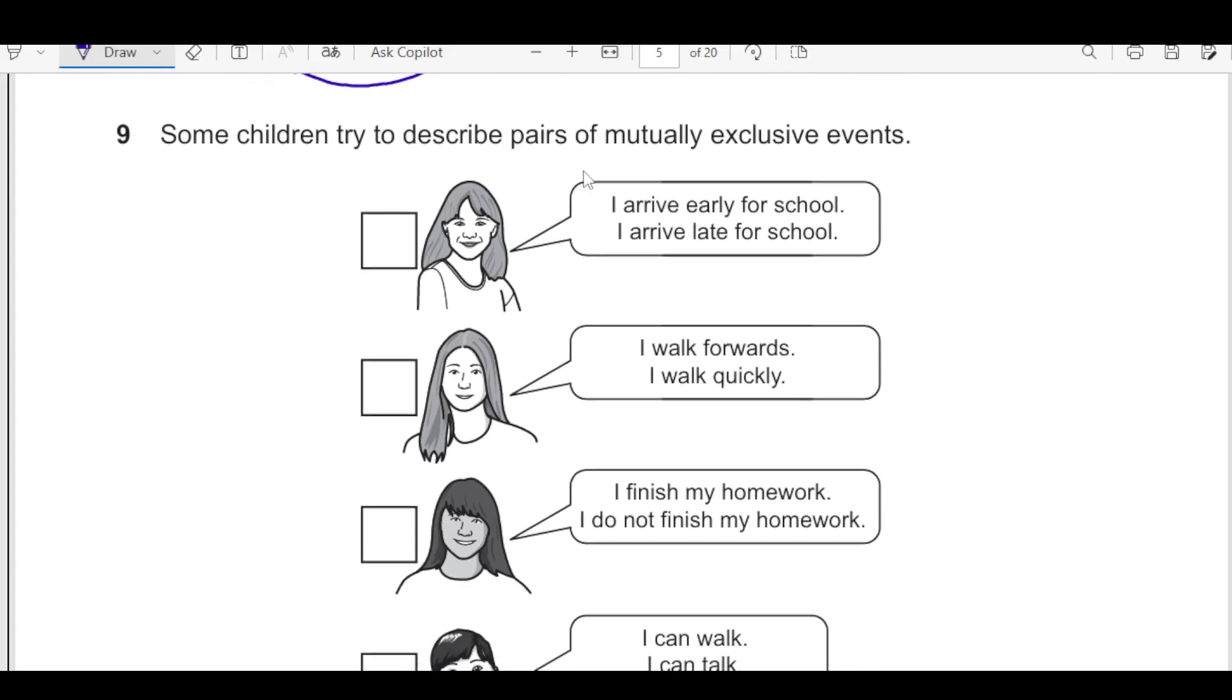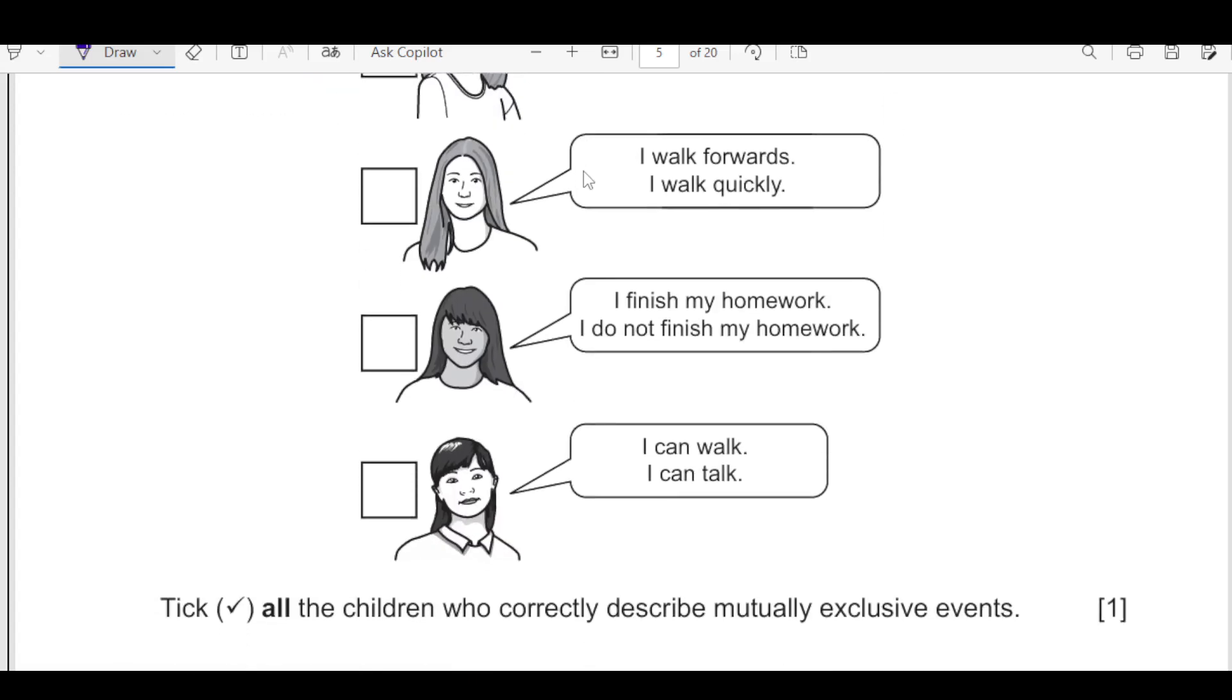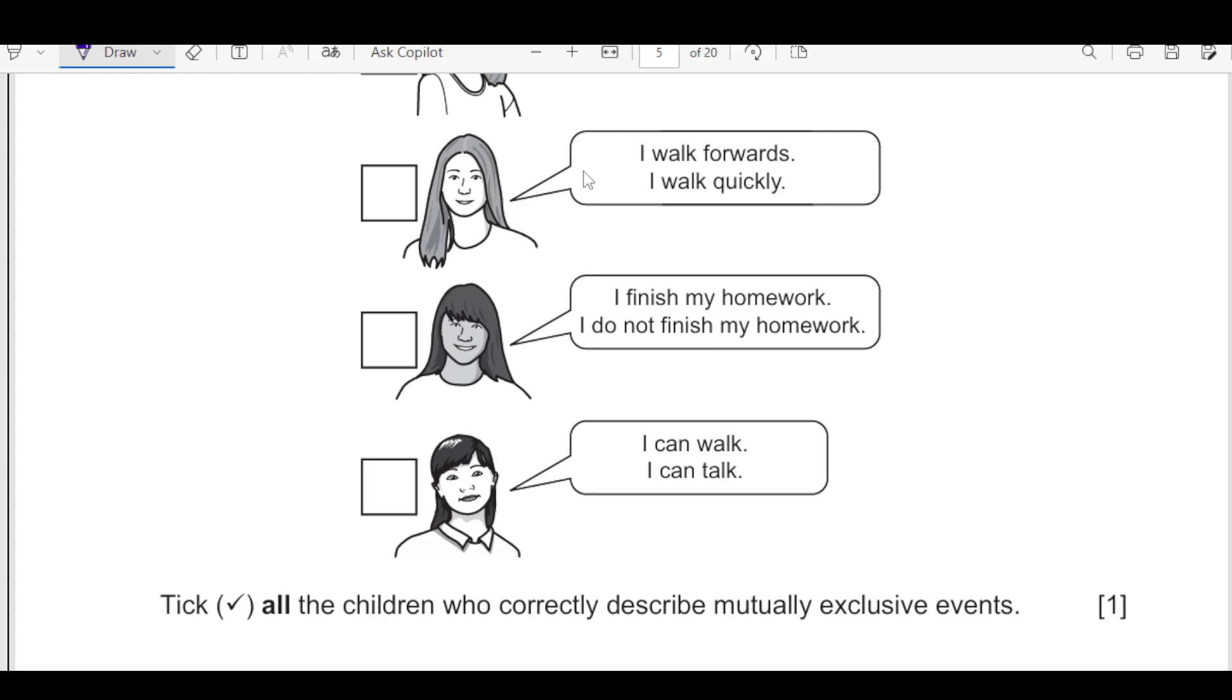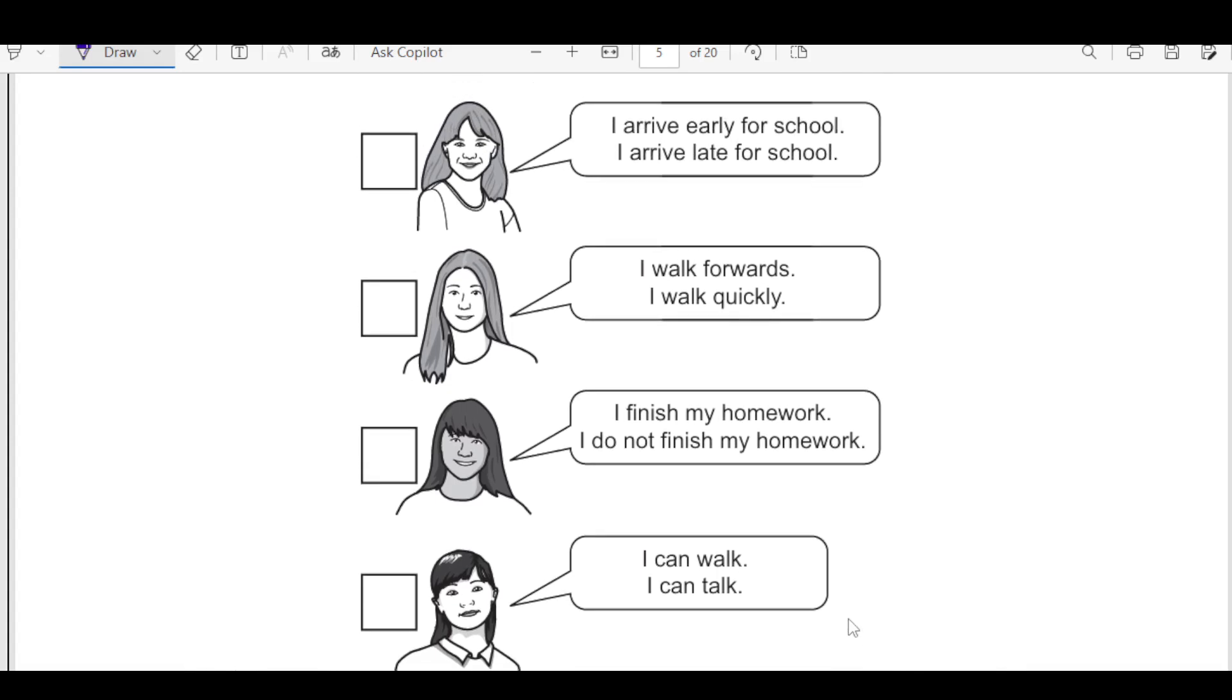Number 9. Some children try to describe pair of mutually exclusive events. The question is tick all the children who correctly describe the mutually exclusive events. I arrive early for school, I arrive late for school. This is mutually exclusive. They are independent on time. I walk forward, I walk quickly. There are two different things, so it cannot be. I finish my homework, I do not finish my homework. Either of these can happen together. None of both cannot happen together. So this is mutually exclusive. I can walk, I can talk. These both can happen together. So this is not mutually exclusive event.